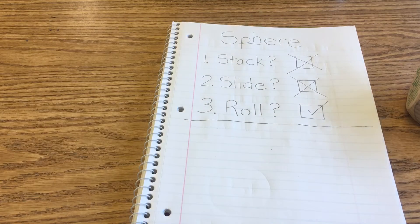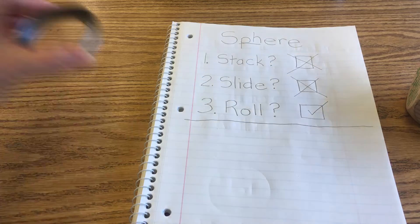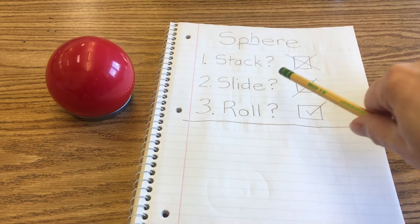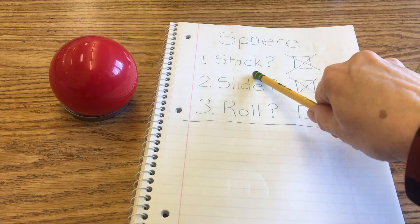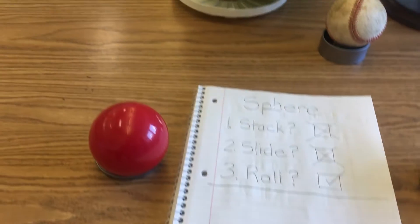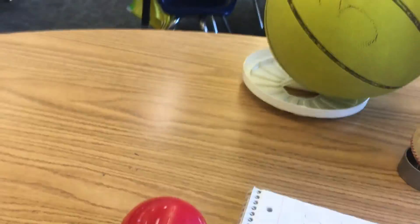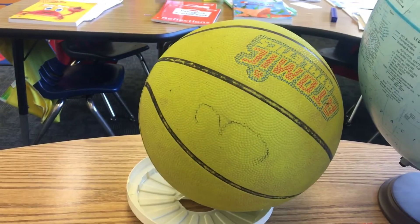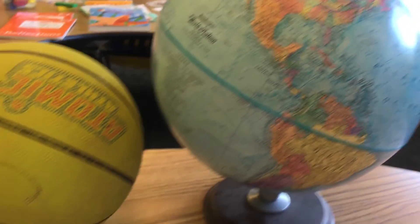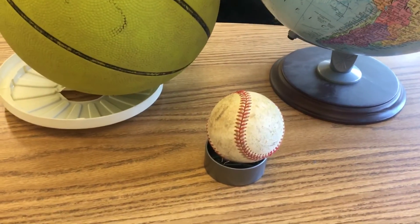Now, I'm going to show you what you're going to do next. So you've written sphere at the top of the page. It does not stack. It does not slide. But yes, it does roll. So now you're going to go look around your house. And little Blackie, he already did this. He went and looked around the school. And besides the little red plastic sphere, he found a basketball is a sphere. A globe is a sphere. A baseball is a sphere.